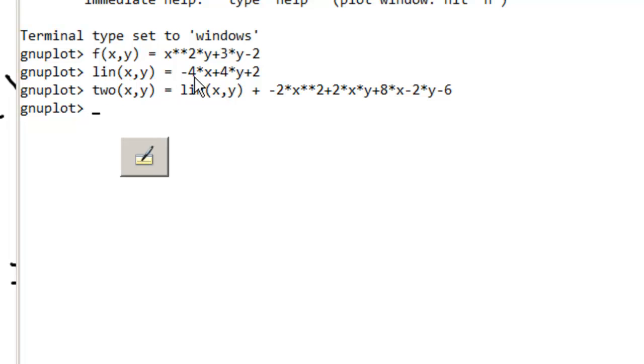I said the linear approximation is just lin(x,y). That's the name of it I decided to give it. -4x + 4y + 2. And then I said 2. Now, this is the second order approximation. I didn't feel like typing that. So I just wrote 2. 2 is equal to the linear part plus this second order stuff that we figured out.